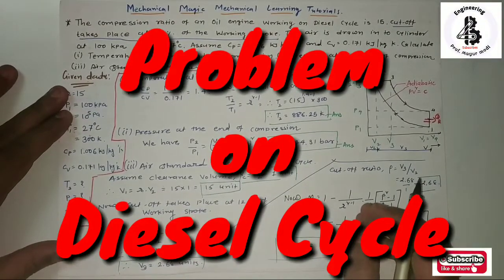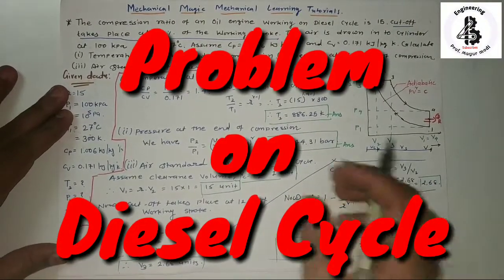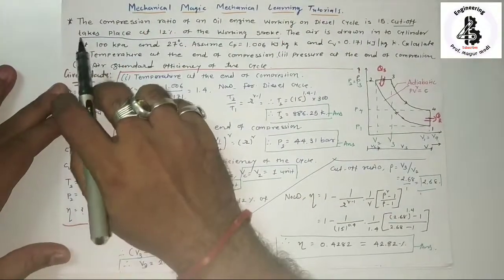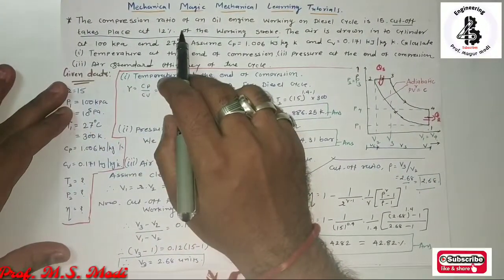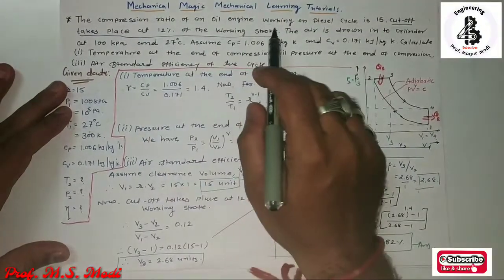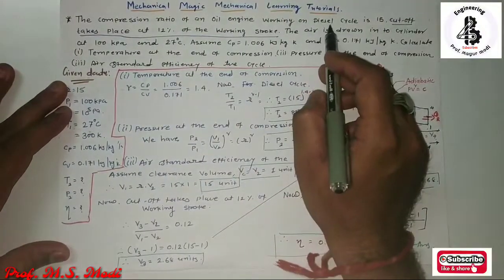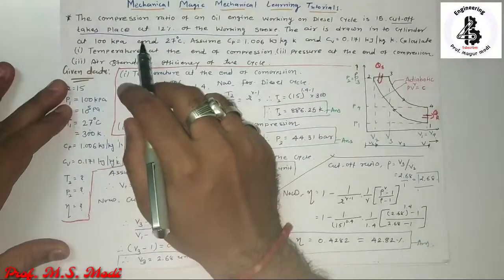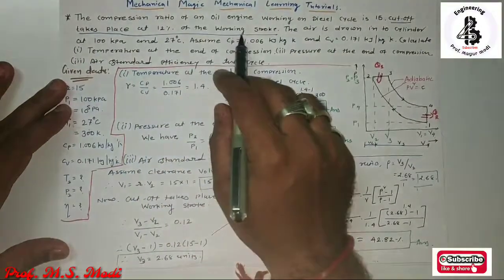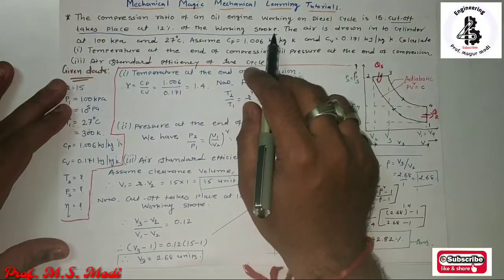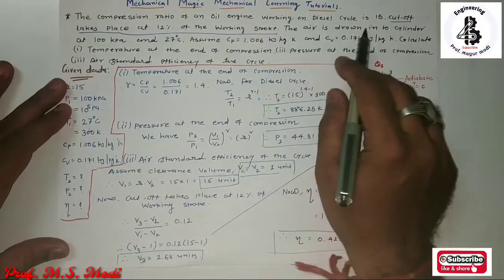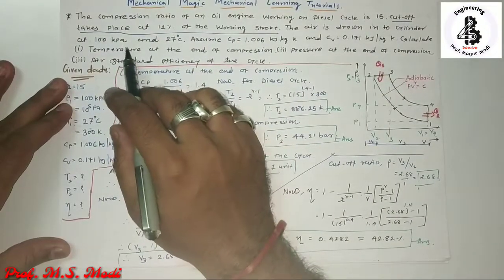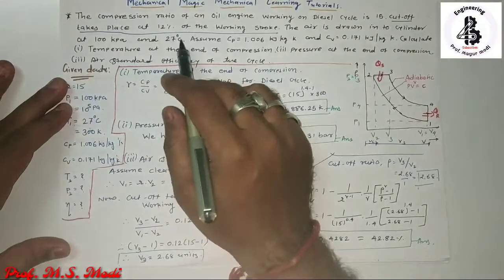Let us see the data which will be given for the problem on diesel cycle. The compression ratio of an engine working on a diesel cycle is 15. The cutoff takes place at 12% of the working stroke. The air is drawn into the cylinder at 100 kPa and 27 degrees centigrade.